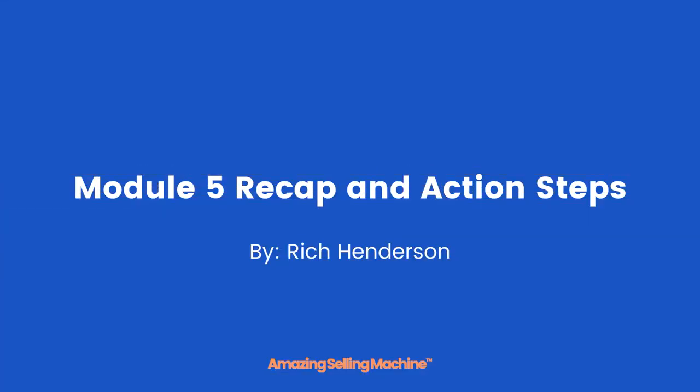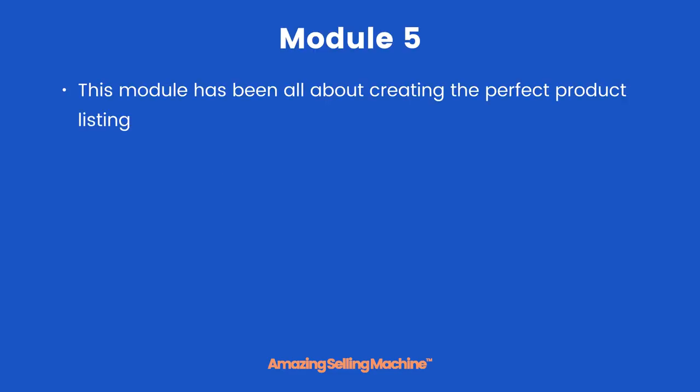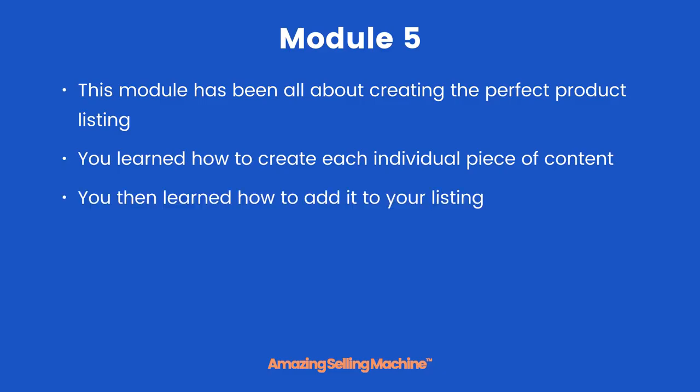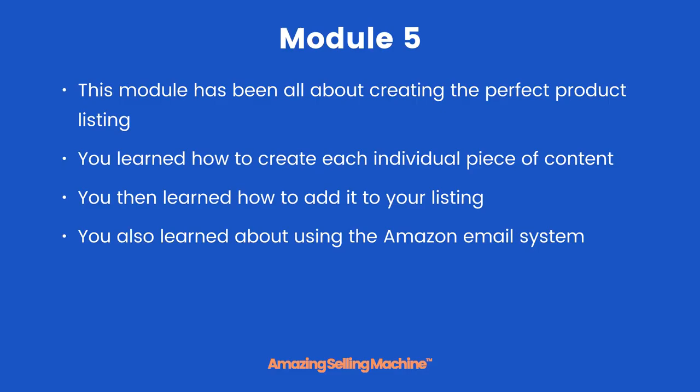In this lesson we're going to recap module 5 and list all the action steps you need to take. This module has been all about creating the perfect product listing. You learned how to create each individual piece of content, how to add it to your listing, and you also learned about using the Amazon email system.